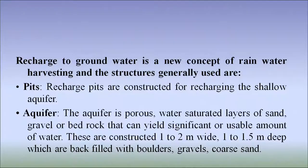Now we will discuss modern methods of water harvesting. There are two main techniques of rainwater harvesting: first, storage of rainwater on surface for future use; and second, recharge to groundwater. Storage of rainwater on surface is a traditional technique and structures used are tanks, ponds, check dams, etc. Recharge to groundwater is a new concept of rainwater harvesting, and the structures generally used are pits. Recharge pits are constructed for recharging the shallow aquifer.